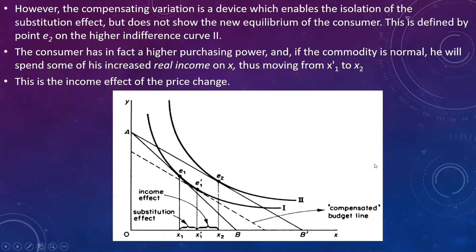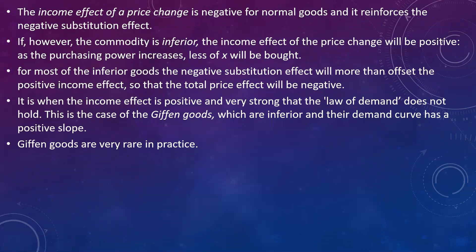The compensating variation is a device that enables the isolation of the substitution effect but does not show the new equilibrium of the consumer. The new equilibrium is defined at E2 on the higher indifference curve, and this shift from E1' to E2 is explained by the income effect of price change. The consumer has higher purchasing power because of the fall in price, so he will spend more income on X, thus moving from X1' to X2. This is the income effect of price change.